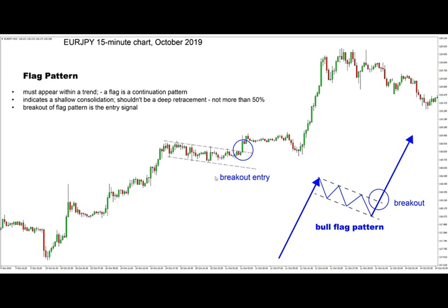The breakout of the flag pattern is our entry signal. As you can see on this illustration, this is the swing of the main trend, then we have a consolidation defined by two parallel lines forming a consolidation channel. That channel is the flag pattern, which appears after a strong bullish swing in a bullish trend, followed by another bullish swing in the direction of the main trend.